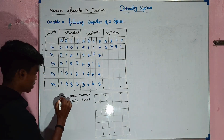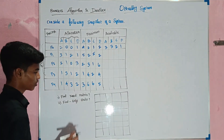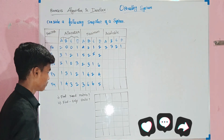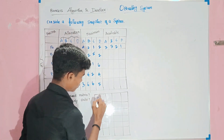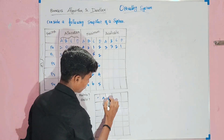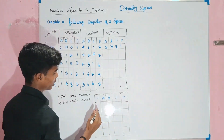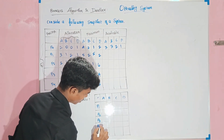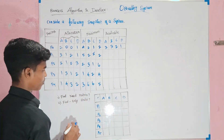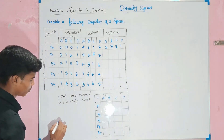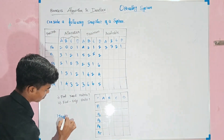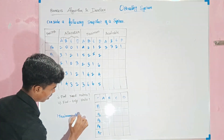First, we need to find the need matrix and the safe state sequence. The need matrix formula is: Need = Maximum minus Allocation. We have variables A, B, C, D for processes P0, P1, P2, P3, and P4.